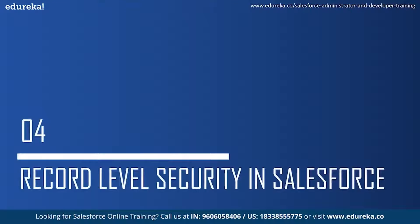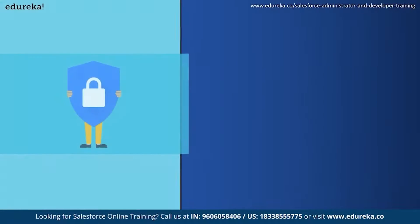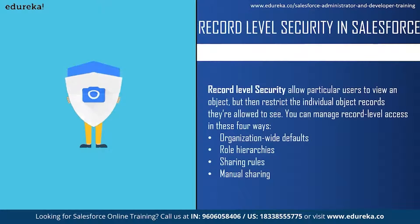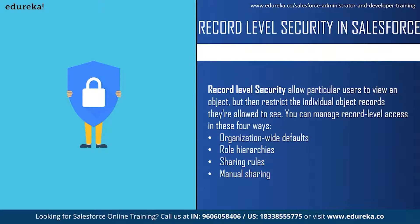Record level security allows a particular user to view an object but restricts which individual records they can see. The user can see the object and its fields, but certain records are not visible to them. For example, an interviewer can see and edit only their own reviews and not those of other interviewers. Record level security is also referred to as Salesforce sharing model, and can be managed in four ways: organization-wide defaults, role hierarchy, sharing rules, and manual sharing.